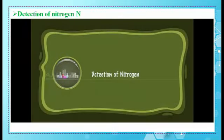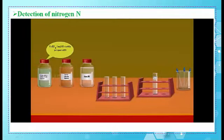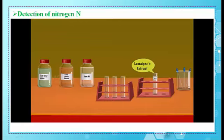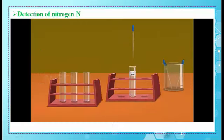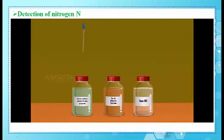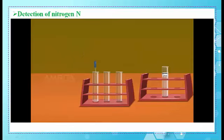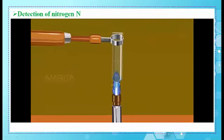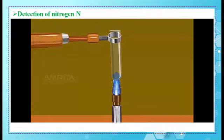Now, how can we identify the element nitrogen? Watch this video. Detection of nitrogen. We require freshly prepared ferrous sulfate solution, ferric chloride solution, concentrated hydrochloric acid, test tube, Lassaigne's extract, and droppers. Take a small amount of Lassaigne's extract using a dropper and pour it into a clean test tube. Using another dropper, take a small amount of freshly prepared ferrous sulfate solution. Pour ferrous sulfate solution into the test tube containing Lassaigne's extract and heat the test tube over the Bunsen burner. The sodium cyanide formed during the preparation of Lassaigne's extract is converted to sodium ferrocyanide on treating with ferrous sulfate.